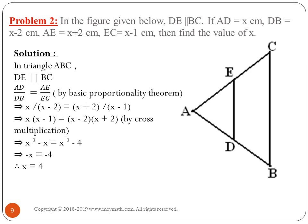With x = 4, the side lengths are: AD = 4 cm, DB = x − 2 = 2 cm, AE = x + 2 = 6 cm, and EC = x − 1 = 3 cm. Different kinds of problems can come up and you can solve them using the Basic Proportionality Theorem. If you want to learn more mathematics, contact me at my email or WhatsApp, and please subscribe to this channel for more mathematics content. Thank you.